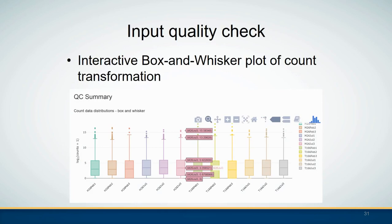IRIS also provides several options for users to check data quality. This interactive box-and-whisker plot of count transformation shows the distribution of the read counts per sample, and by pointing the cursor to different positions of this plot you can see the summary information of the distribution of read counts per sample.